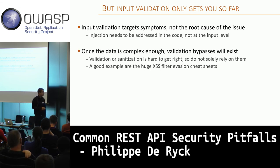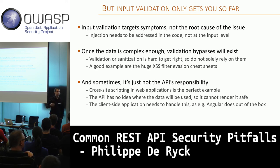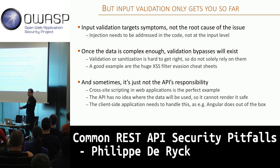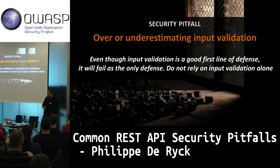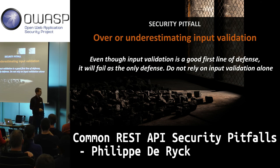Bypasses will always exist — there's plenty of research showing how to bypass things like cross-site scripting filters. In an API world, cross-site scripting doesn't even matter at the API level because the API has no idea where the data is going to be used, so it cannot protect against XSS — that becomes the responsibility of the client-side application. That's why Angular and similar frameworks deploy sanitizers to make sure content injected into the page is safe. The last pitfall is over or underestimating input validation: use it as a primary line of defense, but be aware of its limits.